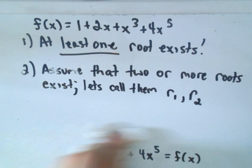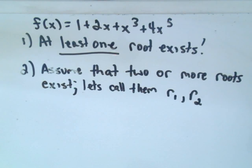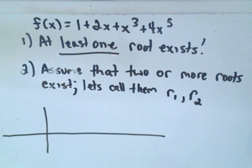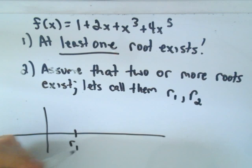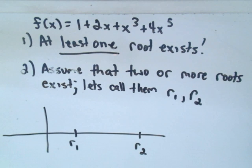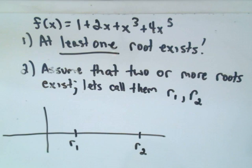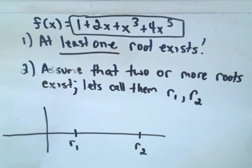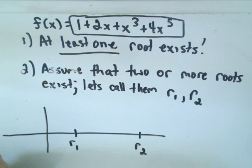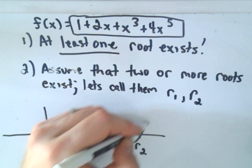We know at least one root is between -1 and 0, but generically let's just call the roots r₁ and r₂. If there are two roots, what has to happen? We know this is a continuous function — it's a polynomial, so that's certain. If this is a continuous function and it crosses the x-axis at two points, let me graph it and think about what the Mean Value Theorem tells us.